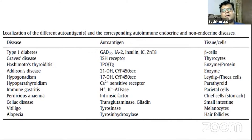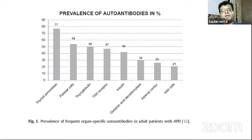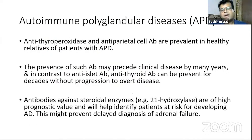Looking at data of all patients with autoimmune polyglandular disease type 2 and the prevalence of antibodies, thyroid and parietal cell antibodies are perhaps the commonest. Thyroperoxidase antibody is present in nearly 80%, parietal cell and thyroglobulin antibodies in nearly 50%, and TSH receptor antibody in around 40-50%, followed by antibodies against insulin and the GAD component. Thyroid antibodies can be positive for years, and unlike antibodies against islet cells, it can be decades before progression to overt disease.